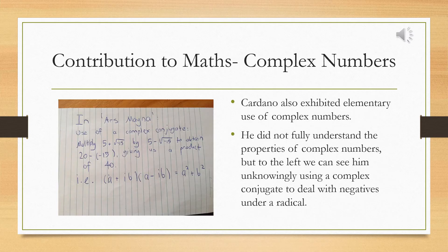Also in Ars Magna, Cardano discussed elementary equations with complex numbers. Cardano did not fully understand the properties of complex numbers, but here we can see him using a complex conjugate to deal with negatives under radicals.